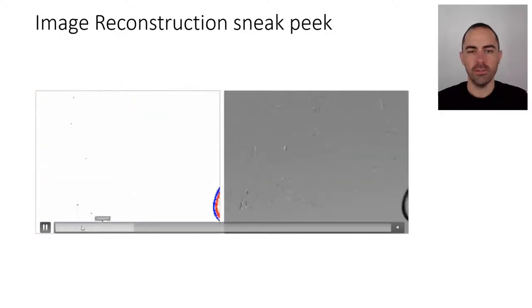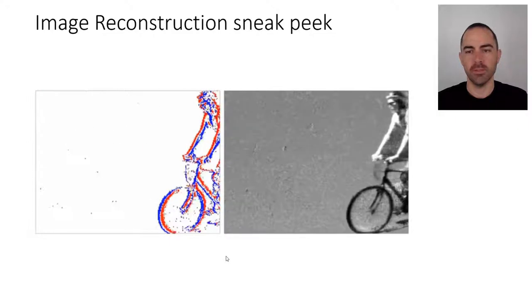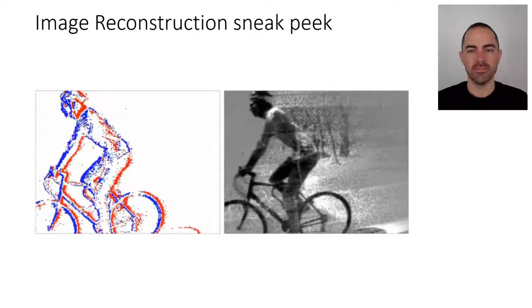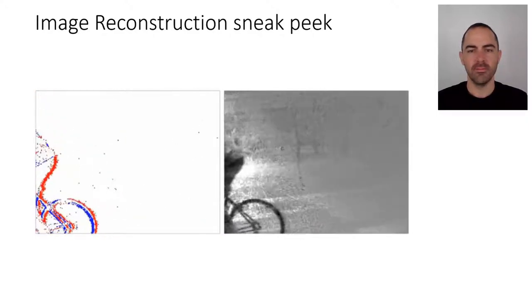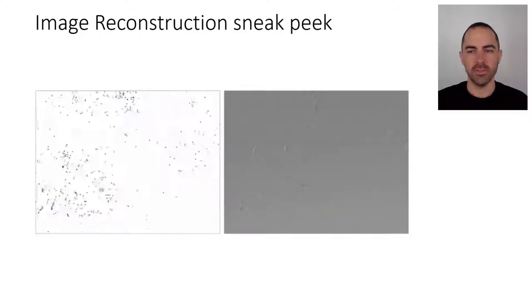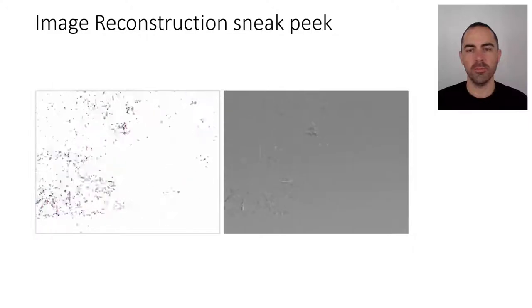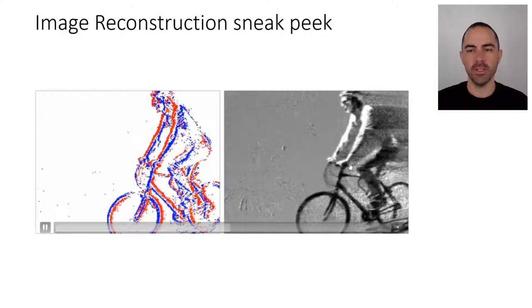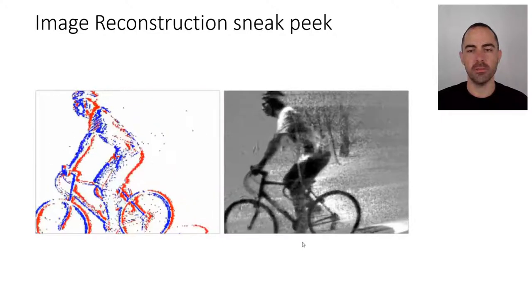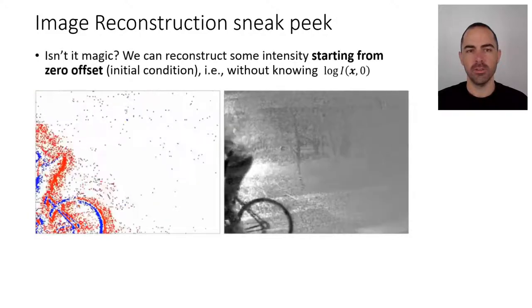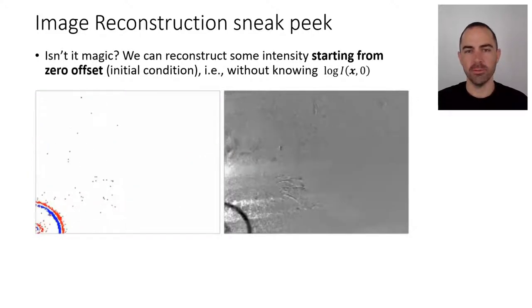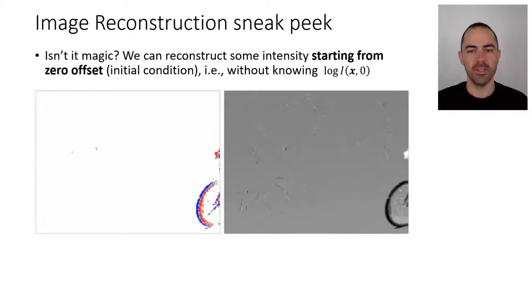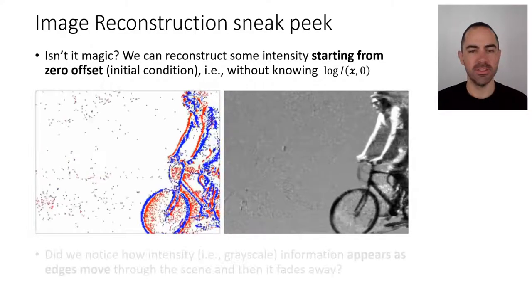So that's the math behind it. Now let's take a look at the image reconstruction. And on the left you see the events and on the right you see a reconstructed example. And I think this is quite interesting because it's somehow surprising that we are talking about the problem of the offset that we don't know the offset and we are starting from a zero initial condition. But we are still able to get somehow grayscale absolute intensity information. So isn't it magic that we are able to reconstruct some intensities starting from zero initial condition and without knowing these offsets?